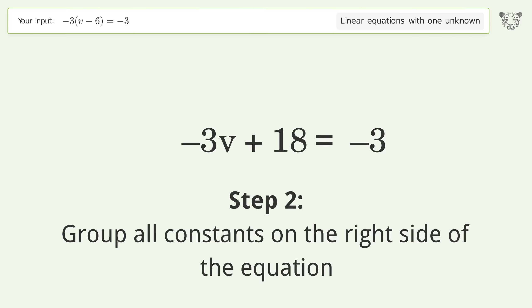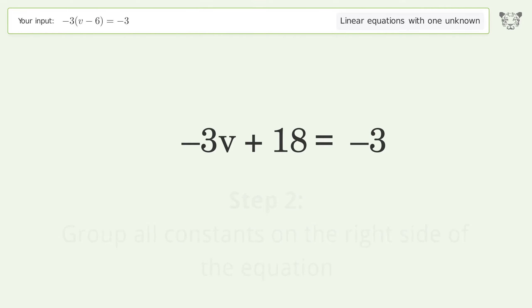Group all constants on the right side of the equation. Subtract 18 from both sides, simplify the arithmetic.